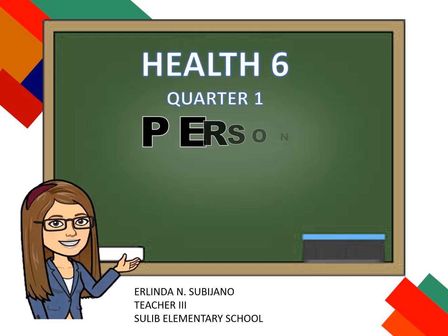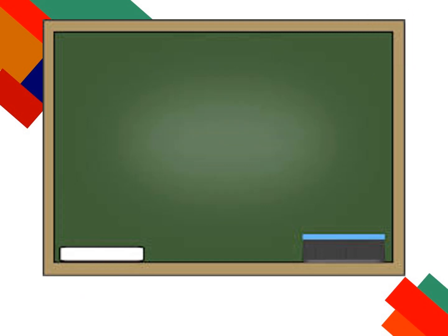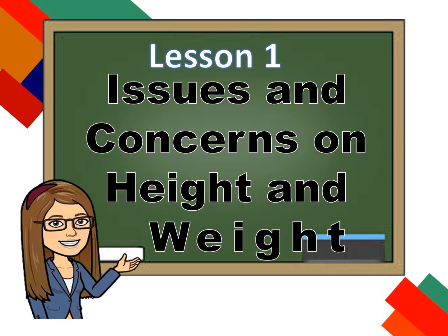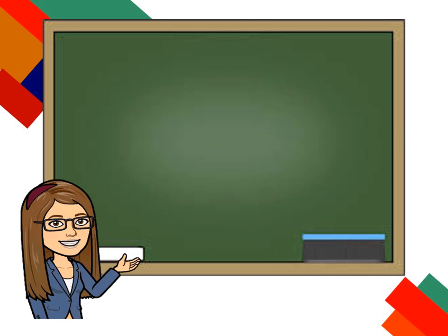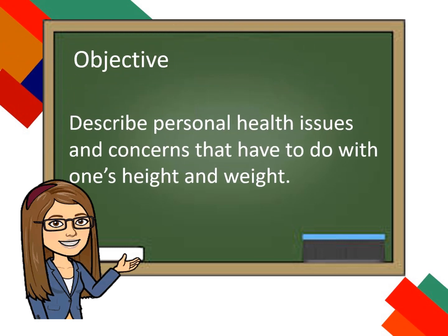Health 6, Personal Health Unit 1, Lesson 1: Issues and Concerns on Height and Weight. Objective: Describe personal health issues and concerns that have to do with one's height and weight.